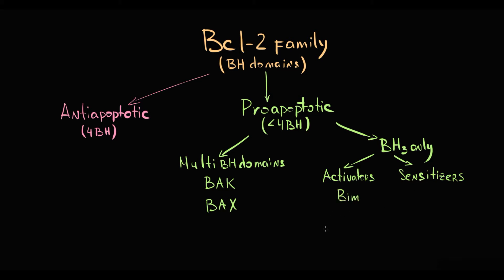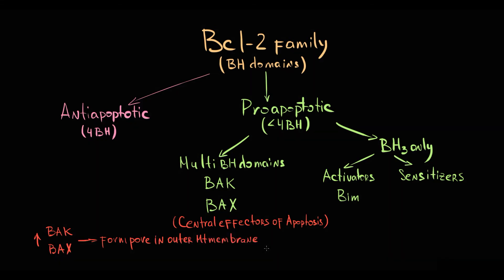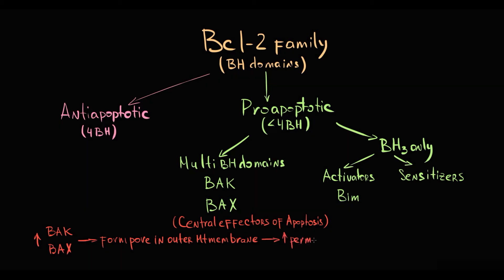The major concept here is that multi-domain proteins such as BAX and BAK are the central effectors of apoptosis. Once they are activated, they undergo conformational changes, oligomerize, and form pores in the outer mitochondrial membrane. In normal conditions, the outer mitochondrial membrane is impermeable. Obviously, once a pore is formed, the permeability of the membrane increases, and this phenomenon is called mitochondrial outer membrane permeabilization.